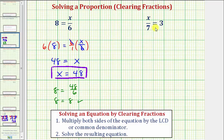Looking at our second equation, the only denominator we have is seven. And therefore, seven is the least common denominator. So to clear the fractions, we multiply both sides of the equation by seven.